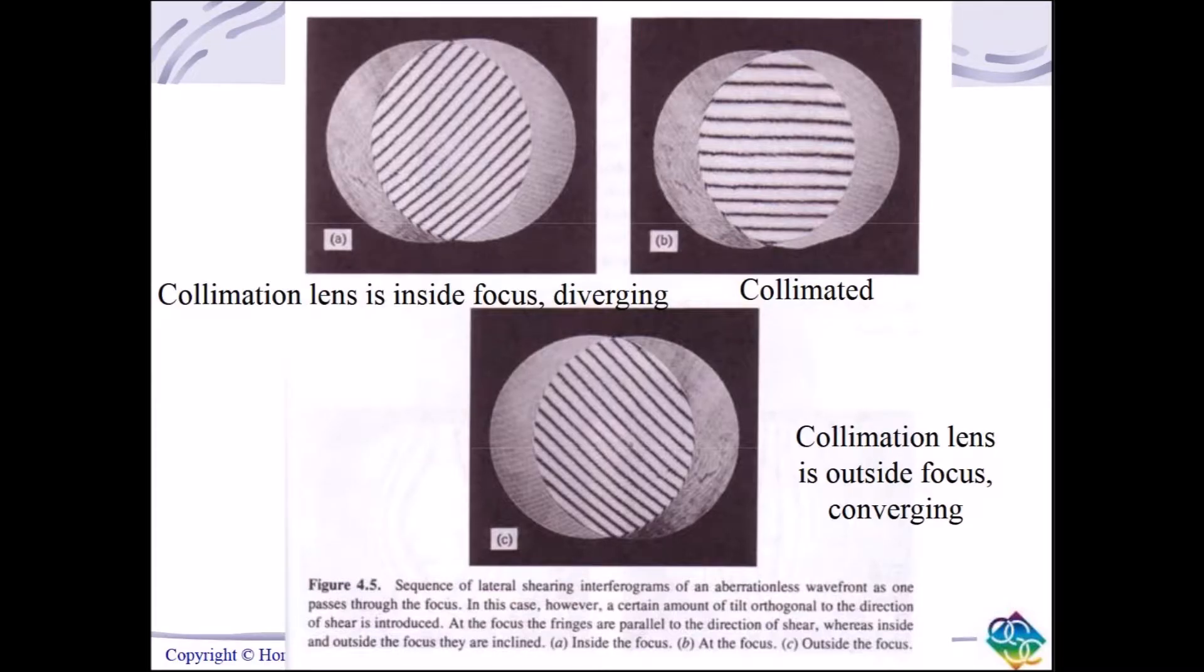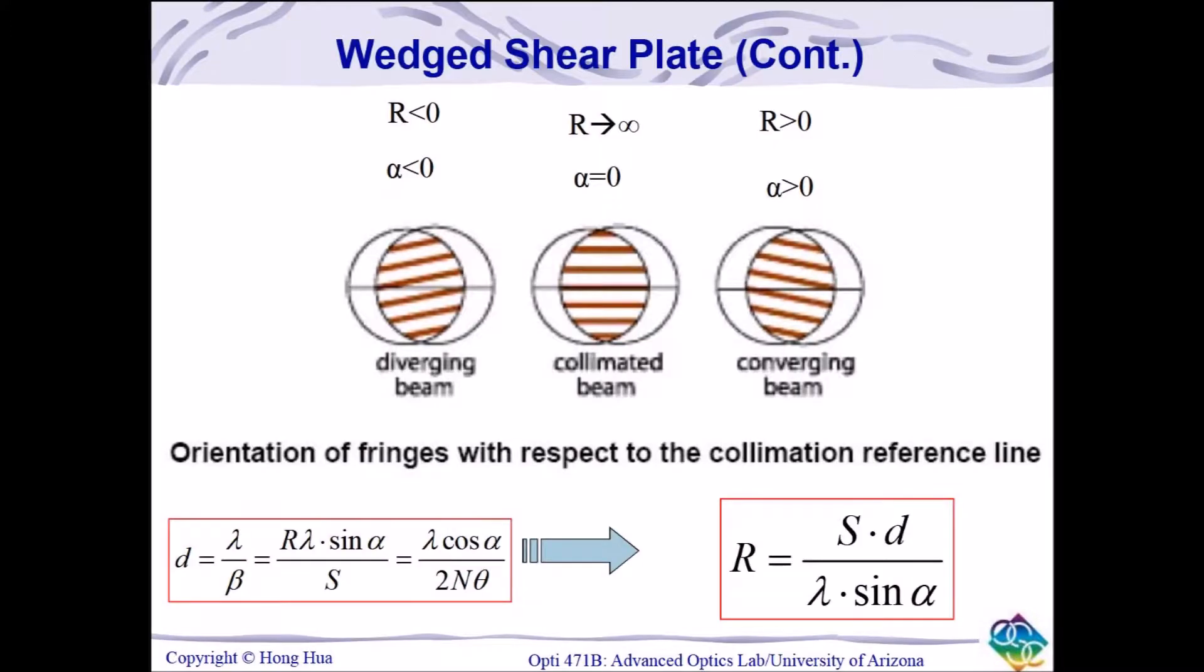For subsequent parts of the lab, we can tell whether the beam is converging or diverging at the location of the shear plate by the orientation of the fringes, or which way they're tilted. The orientation also tells us about the wavefront, whether it's negative or positive.